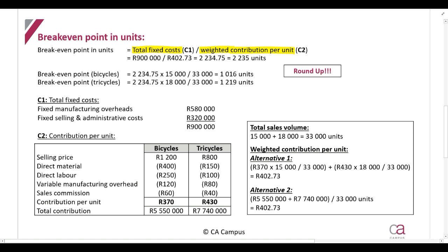So we have two different calculations to look at. First, let's calculate total fixed costs. This is a very simple calculation — there are two fixed costs in this question. You just add the fixed costs together to get total fixed costs, and include that in the calculation above.